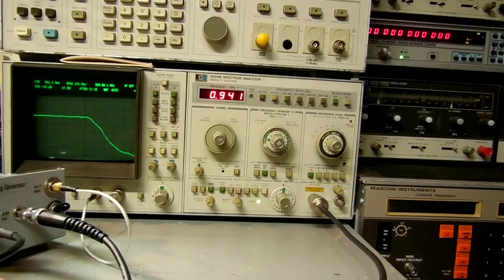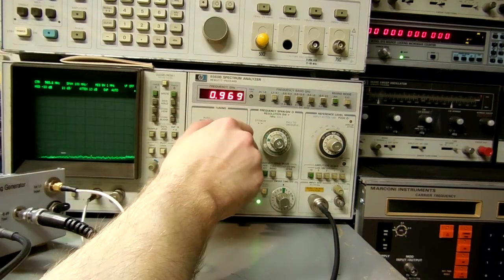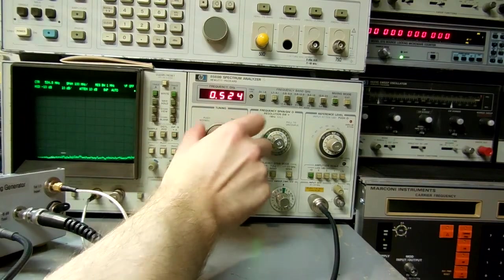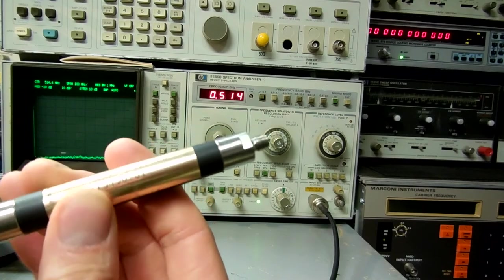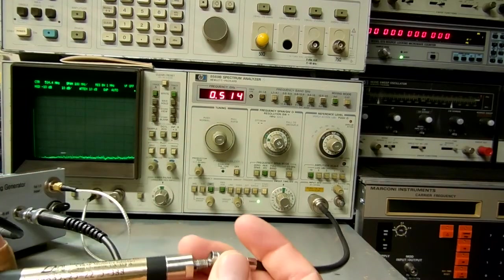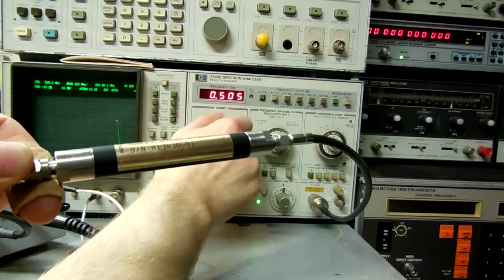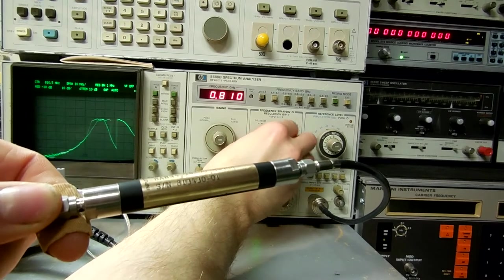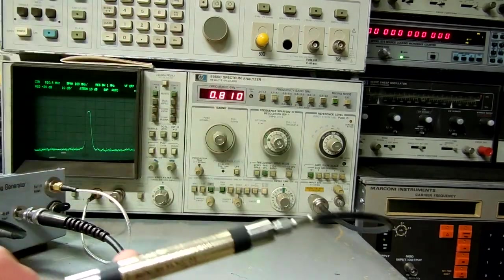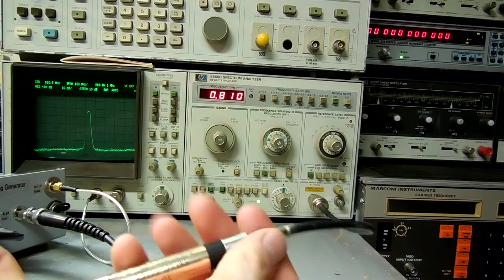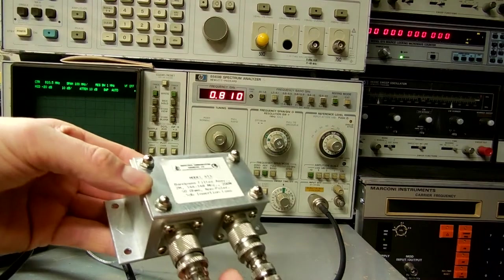I'll show you some quick other things. This is a bandpass filter for cellular phone band. It's 830 megahertz, 20 megahertz wide. You can kind of see how handy having a tracking generator is for classifying filters and stuff that you just have laying around.